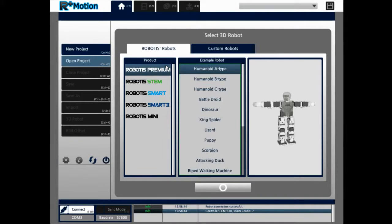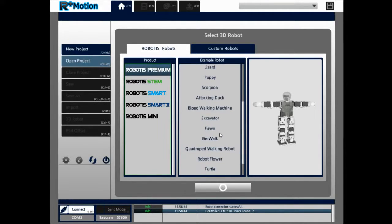And the controller is recognized. So let's go to Robotis Premium, scroll down just a little bit, down to GerWalk. Select it and press OK.